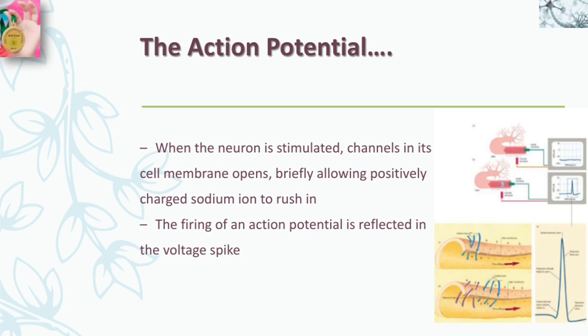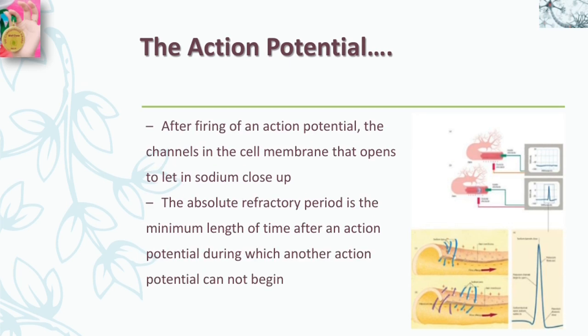The firing of an action potential is reflected in a voltage spike — like a spark traveling along a trail of gunpowder, the voltage change races down the axon. After the firing of an action potential, the channels in the cell membrane that opened to let sodium in close up, and some time is needed before they are ready to open again. Until that time, the neuron cannot fire. The absolute refractory period is the minimum length of time after an action potential during which another action potential cannot begin. This down time is only one or two milliseconds, followed by a brief relative refractory period, during which the neuron can fire but its threshold for firing is elevated, so more intense stimulation is required to initiate an action potential.